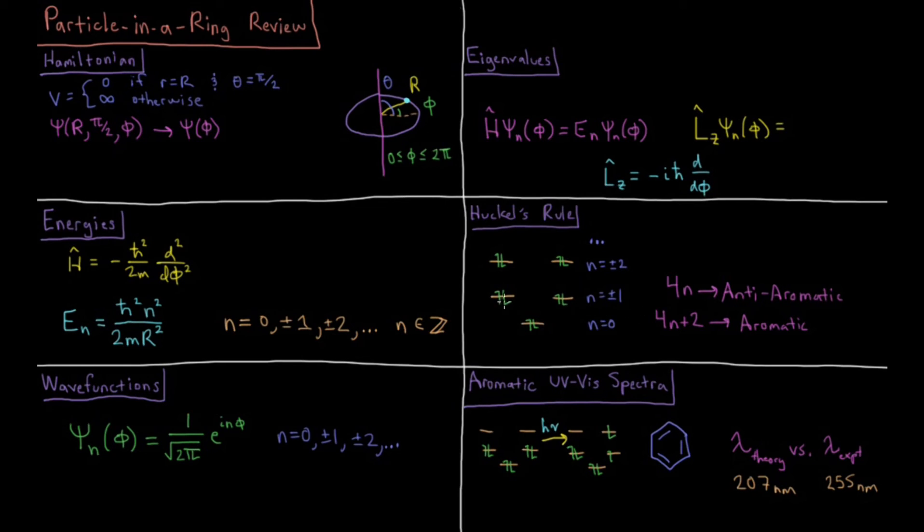This is why things like benzene with six electrons are aromatic, things like cyclobutadiene are anti-aromatic with 4, this would be partially filled, and things like the cyclopropenyl cation with 2 will be aromatic.